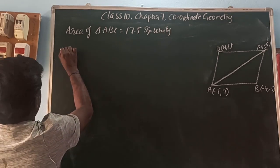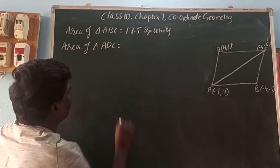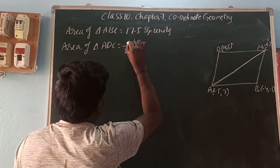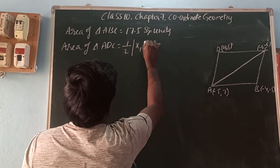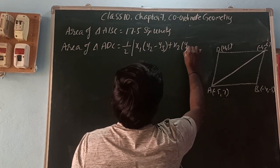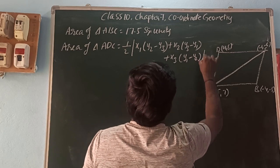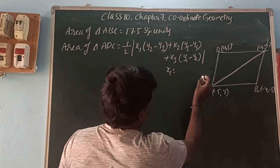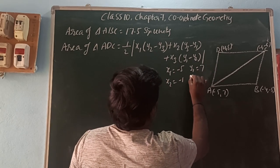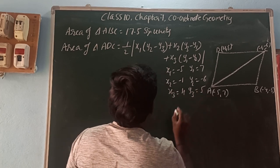Next, find the area of triangle ADC using the triangle area formula. Here the vertices are A(-5, 7), D(4, 5), C(-1, -6), so x1 = -5, y1 = 7, x2 = -1, y2 = -6, x3 = 4, y3 = 5.